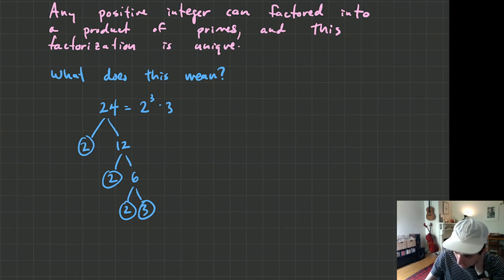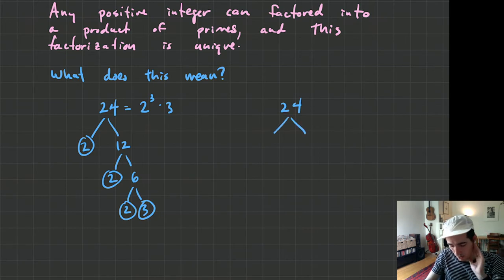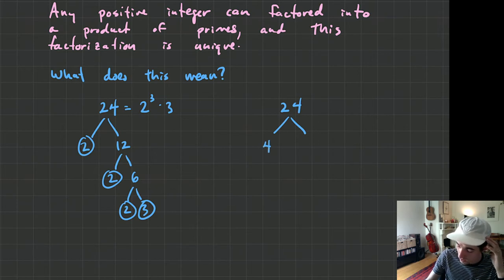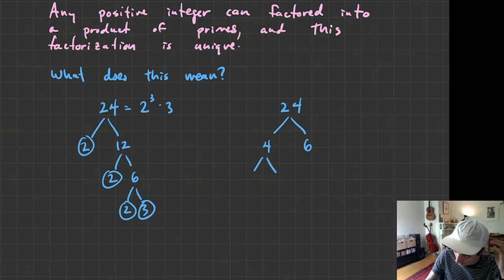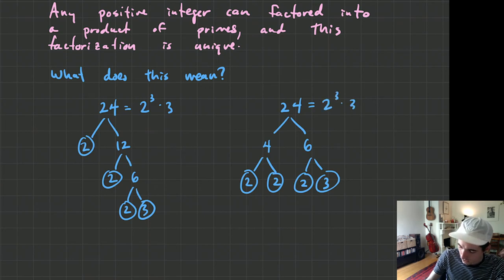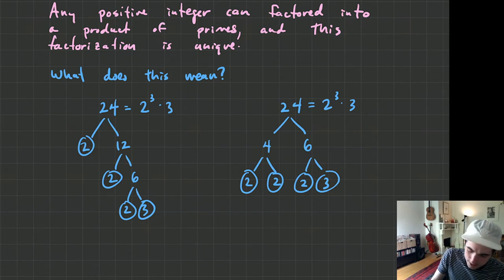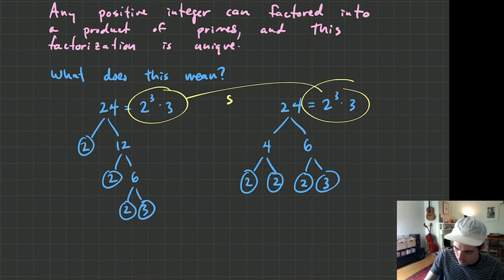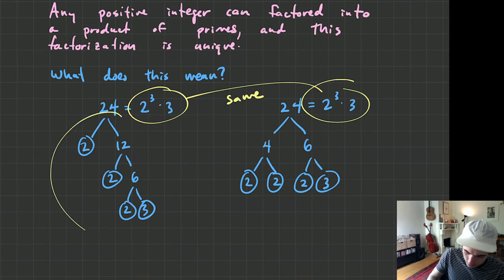Someone else might say, I want to factor 24 in a different way — how about four and six instead of twelve and two? Well, four is 2 × 2 and six is 2 × 3. Even though we chose different numbers to begin with, we're still left with the same prime factorization.